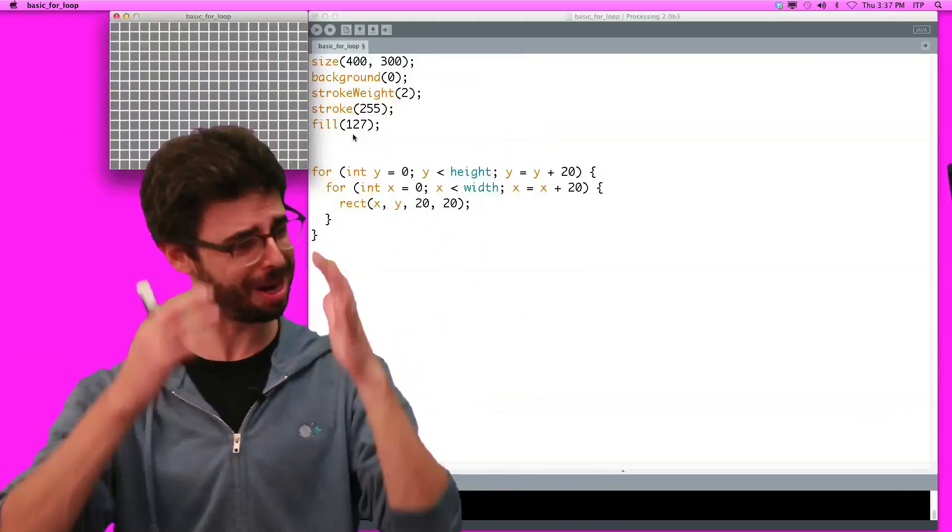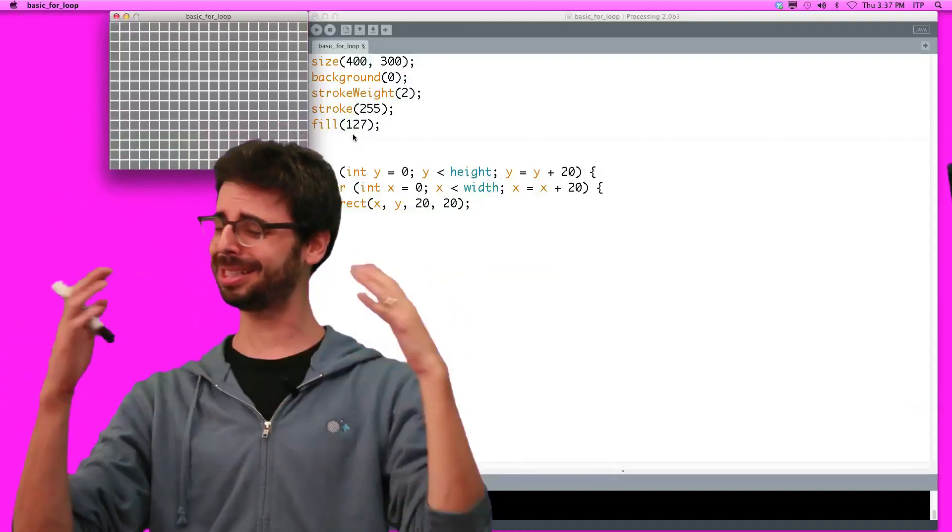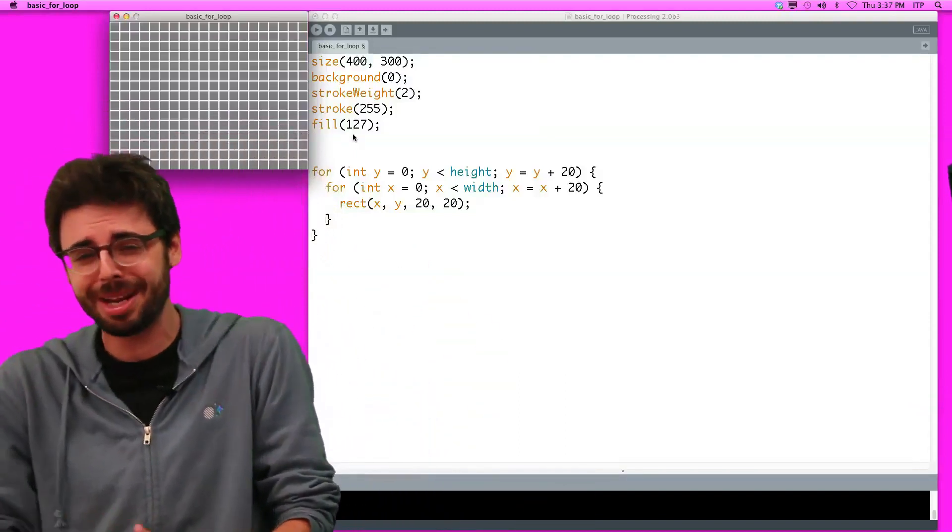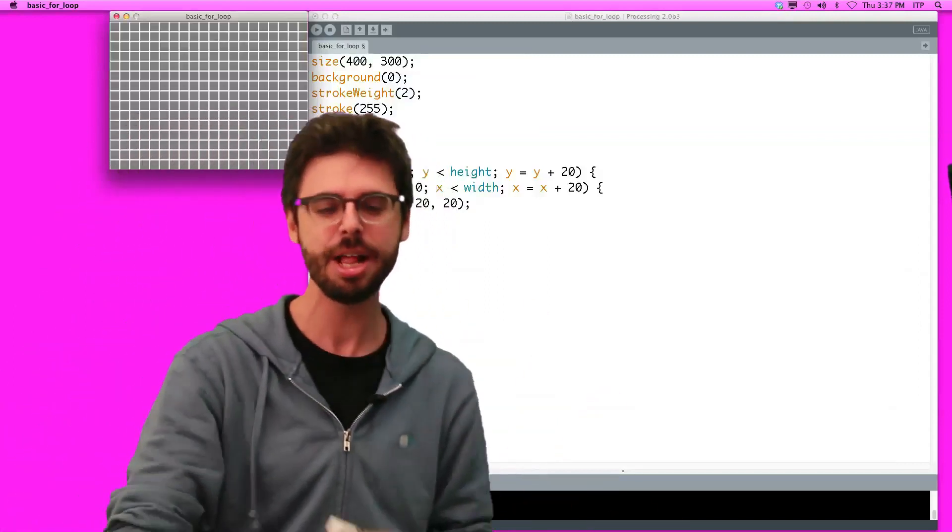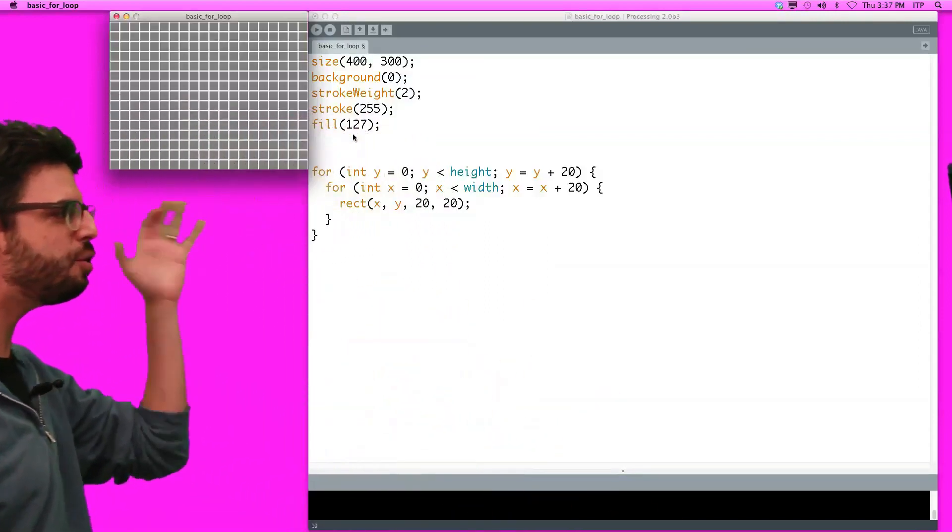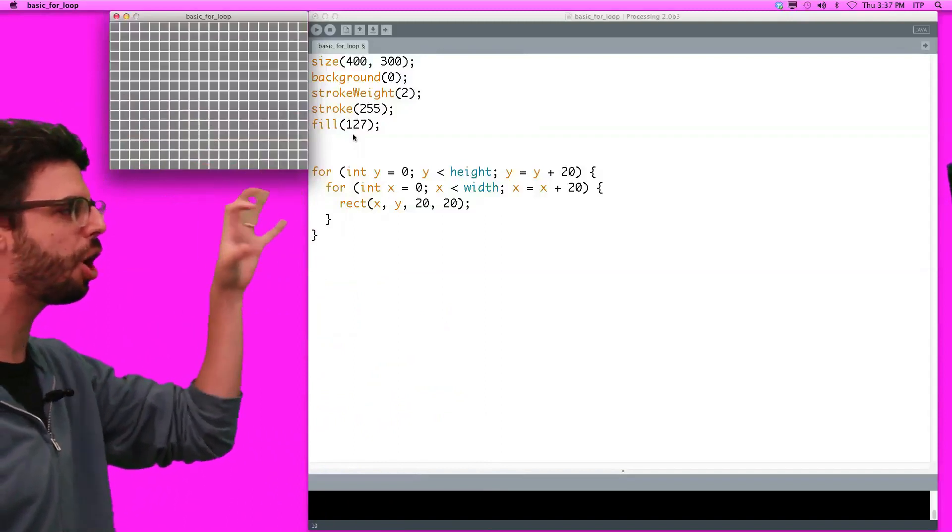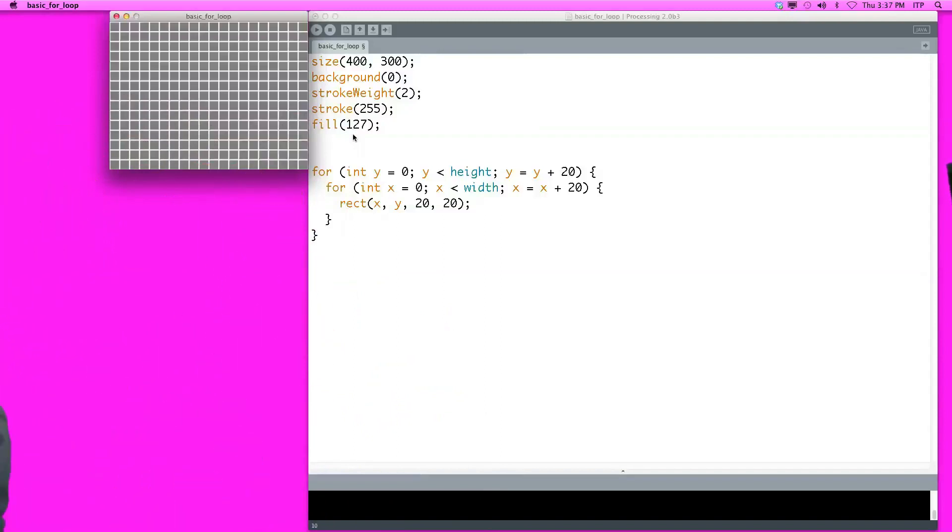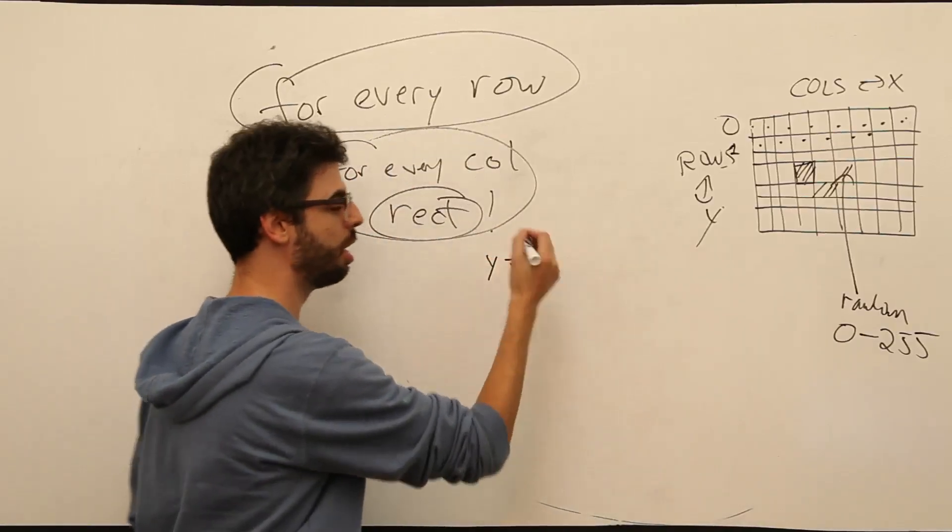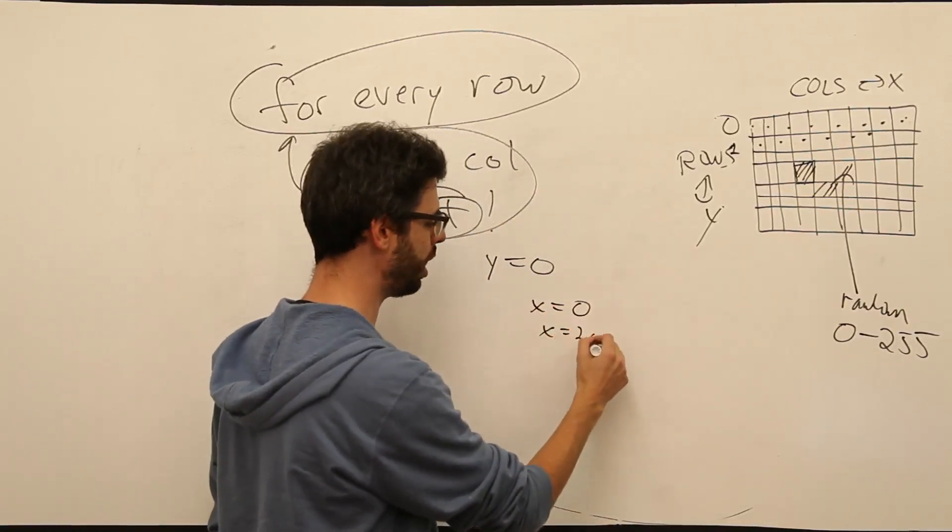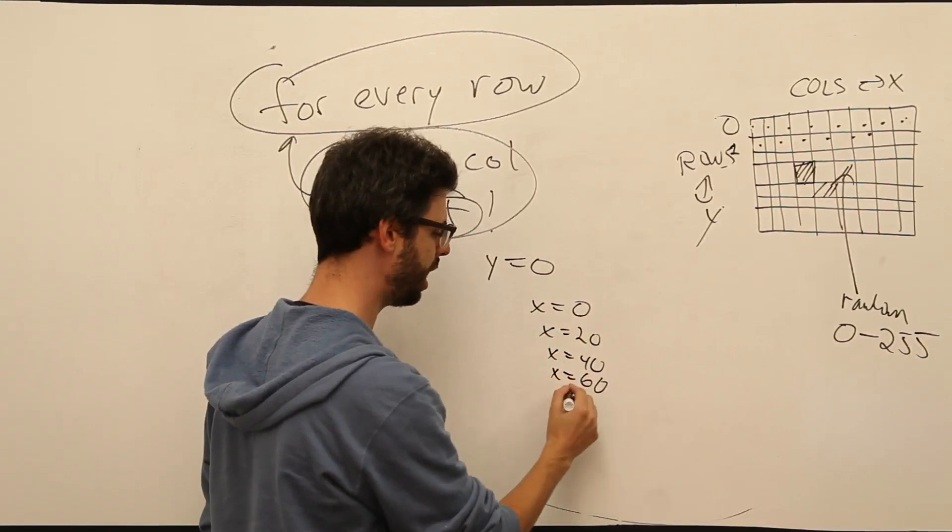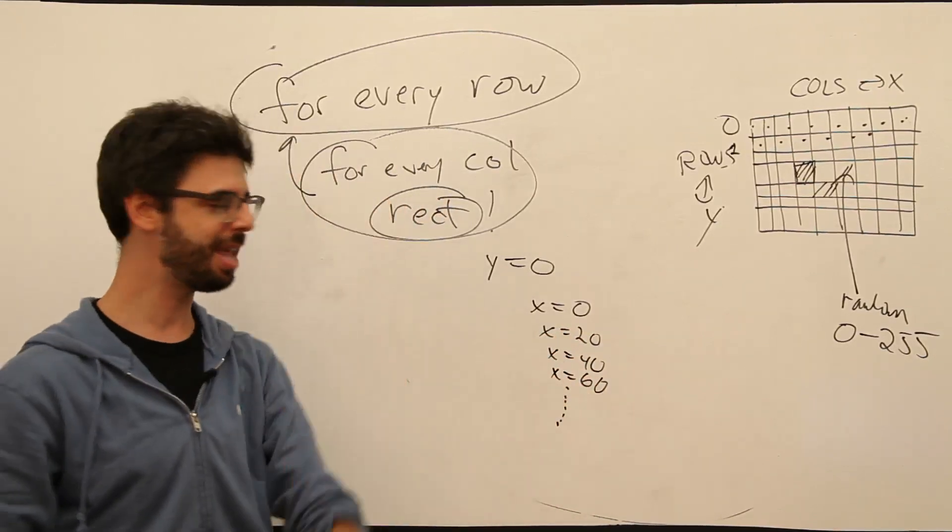This might sound confusing. It might be causing you some confusion. You might need to just take a break, lie down for a few minutes, look at this again, have a snack, look at it again. But if you really think about it, if you really can get yourself to walk through this code, what's happening? Well, first y is equal to zero. Then what happens? OK, well then x is equal to zero. Then x is equal to 20. Then x is equal to 40. Then x is equal to 60, et cetera.